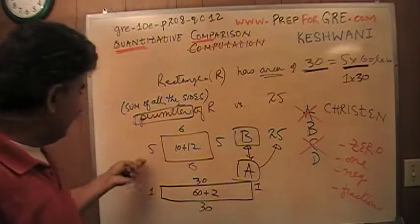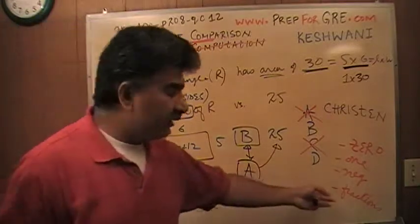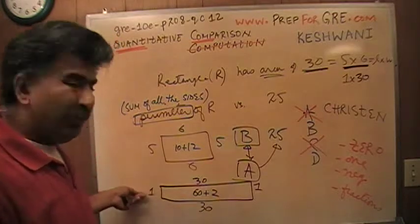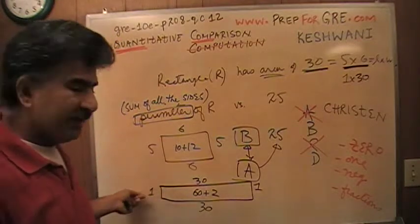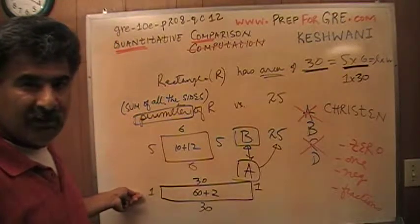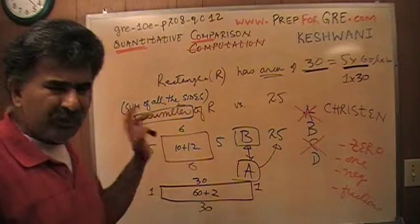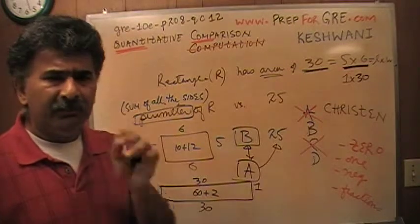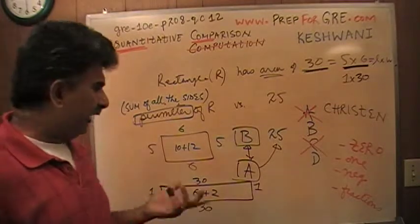It could be 1 by 30. It could be 5 by 6. To say nothing of the fact that there are fractions. It could be half and 60. It could be one-tenth. It could be one-millionth of 30 million. It could be anything. There are infinite possibilities of this rectangle. And we cannot really tell the perimeter of a rectangle at all. So the answer is D.